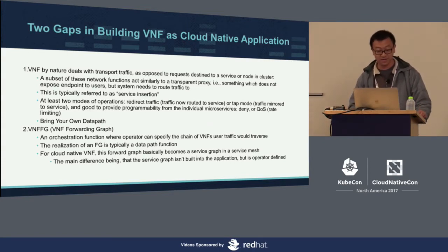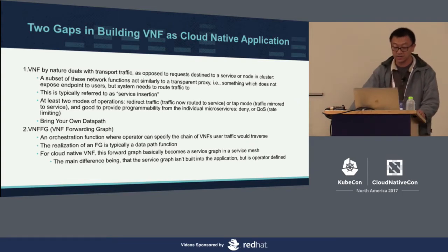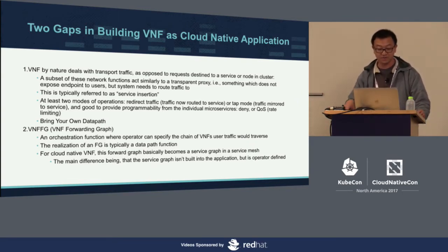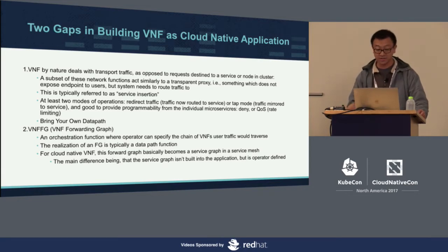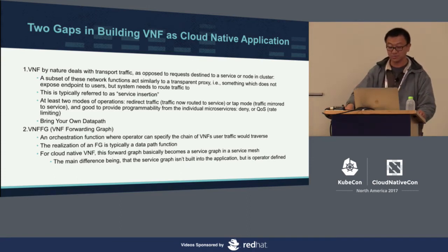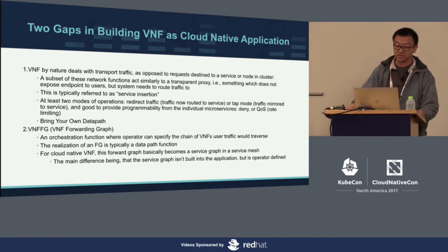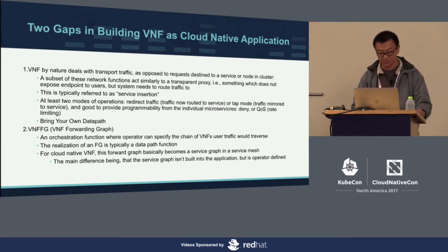The second obvious gap is VNF FG — an NFV term. FG stands for forwarding graph. It is an orchestration function where operators specify a chain of VNFs that traffic traverses through, realized by the data path. If you convert VNFs to cloud-native VNFs, instead of data path stitching, you create a service graph by making API calls between microservices. The key difference is that instead of applications defining the service, it is operator-defined. The framework is supposed to address both gaps.